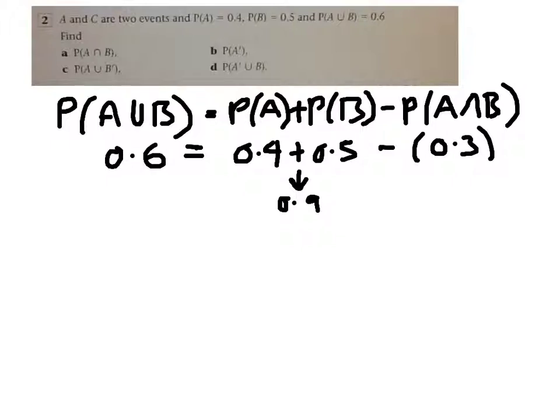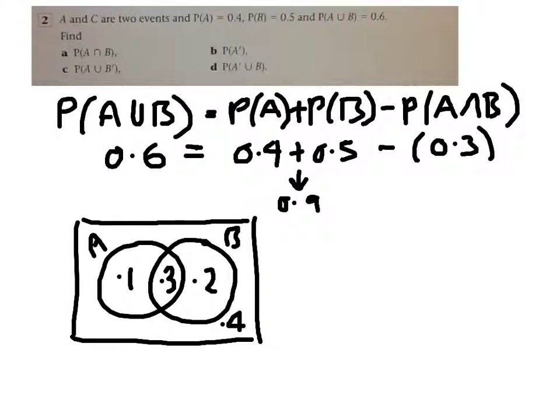Now I'm going to put the information into a Venn diagram. You can realize why it's 0.3, 0.1, and 0.2. Just as you've seen in the previous question, you put the overlap in first and then make sure your A altogether comes to 0.4 and your B comes to 0.5. All of that adds up to 0.6, leaving 0.4 outside of A and B, but inside of the rectangle. So probability that I'm not in A is going to be 0.6. You don't actually need the Venn diagram for that, you can just do 1 minus 0.4.